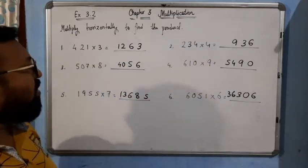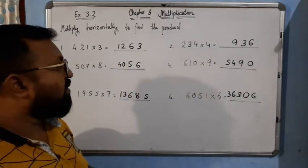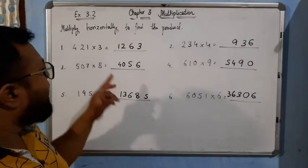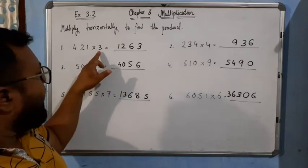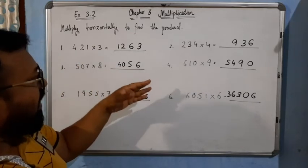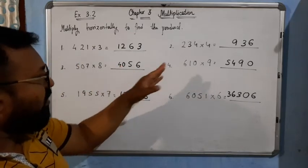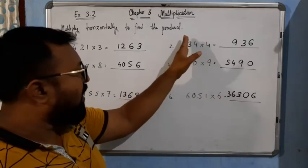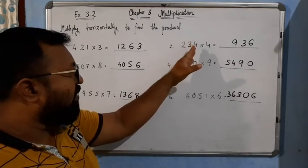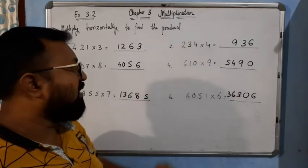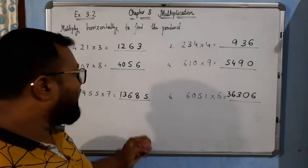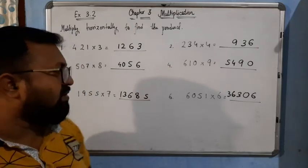So I hope you have understood this. It is very simple. Whatever number you get as a carry over, you will forward it to the next higher number and add it with the multiple. So it is very simple. I hope you have understood nicely.